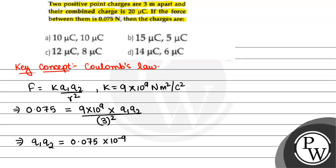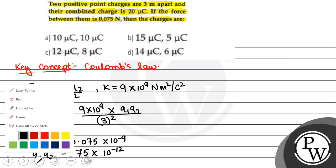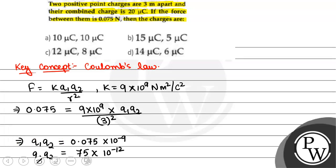From this calculation, Q1 Q2 will be equal to 75 into 10 to power minus 12.